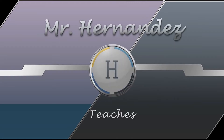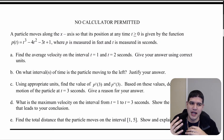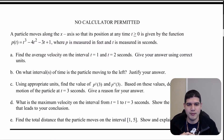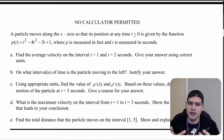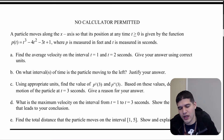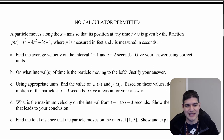As promised there's a lot to do in this problem. First notice that we're given a particle function p(t) = t³ - 4t² - 3t + 1. We know it's measured in feet and t is measured in seconds.